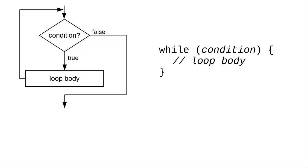Here's how you write this generic while loop in C. As with the for loop, the style guidelines for this course are to always put braces around the loop body, even when it contains only one statement.